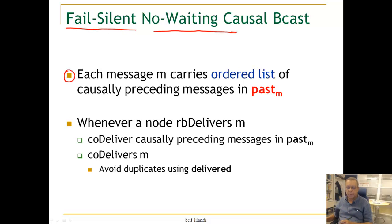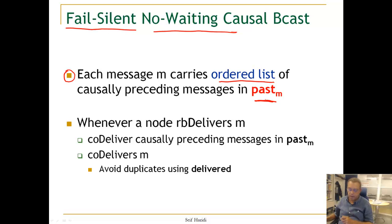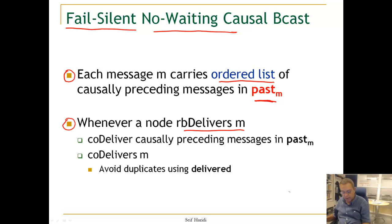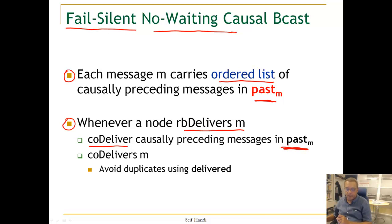Each message M carries an ordered list — a sorted list of causally preceding messages in a variable we call 'past'. So 'past' is a list sent together with a message M, including an ordered list of all causally preceding messages. Whenever a node reliably delivers M, before it causally delivers M, it causally delivers all preceding messages in the associated list 'past' if not already delivered, and then delivers M. It uses a variable called 'delivered' to guarantee no duplicates are delivered.